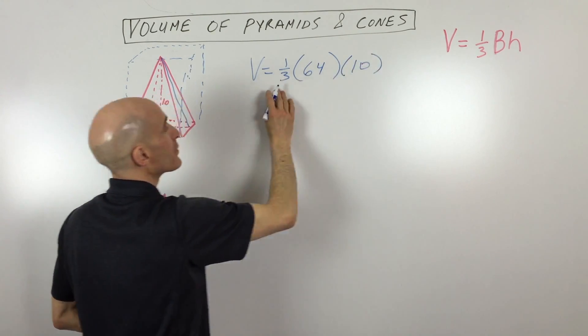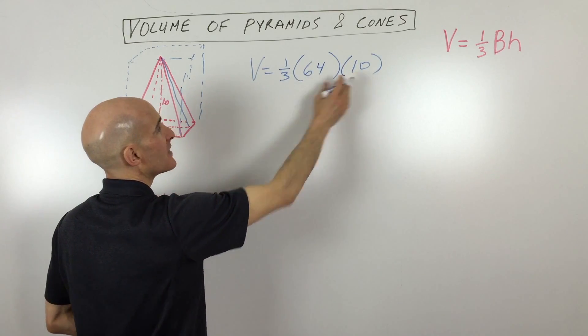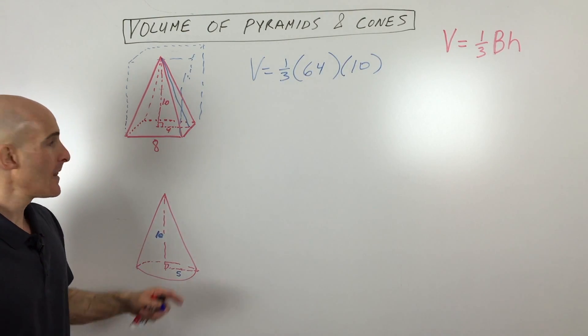And so there you go. So it's one third times 64 times 10. That's going to give you a volume, and that's going to be in units cubed.